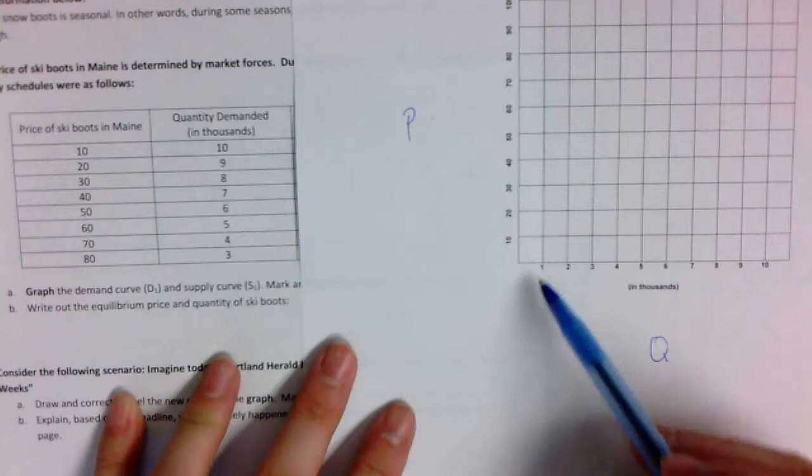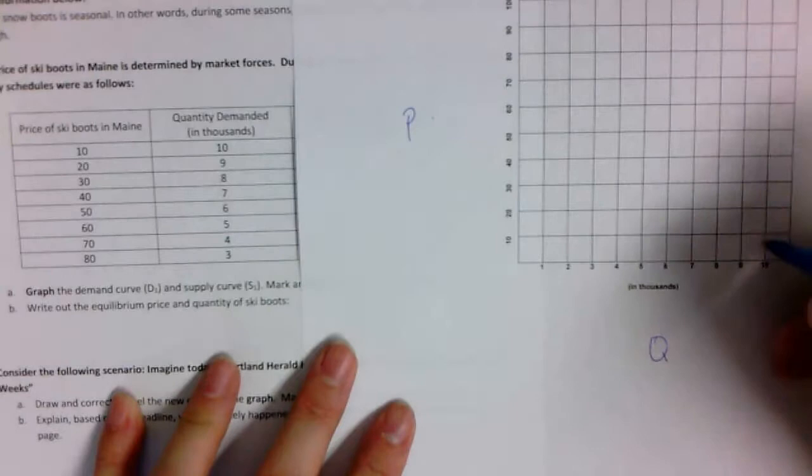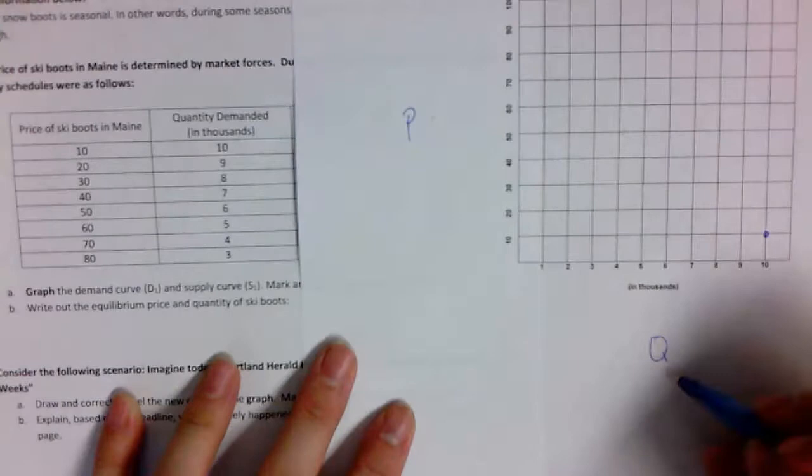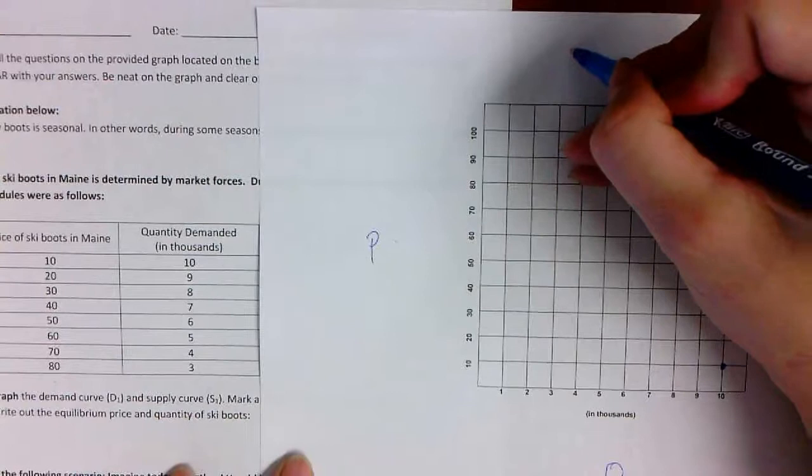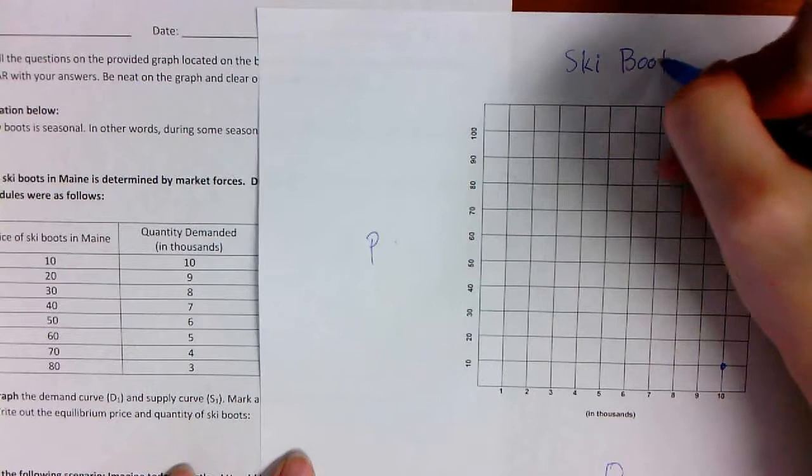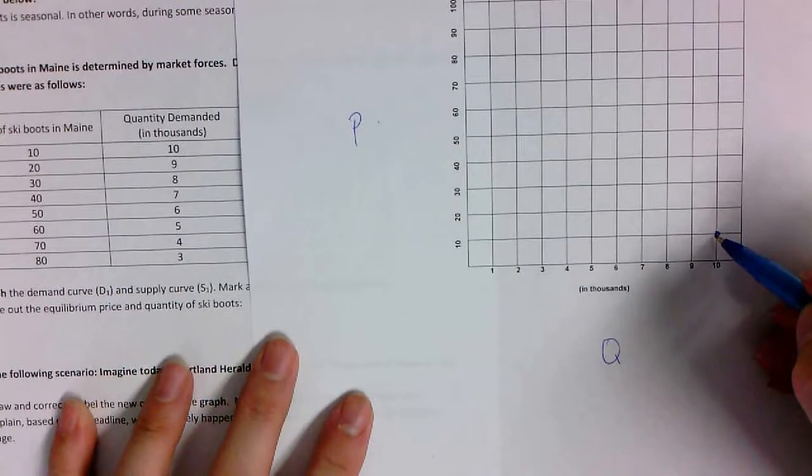If the price of ski boots is $10, then people are going to want 10,000 of them. So here's the price here. Price is $10. People are going to want 10,000 of them at that cheap of a price. Let's put over here.